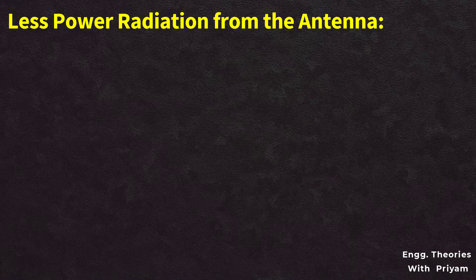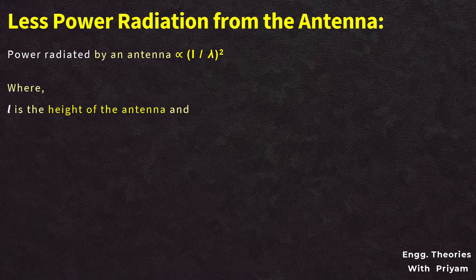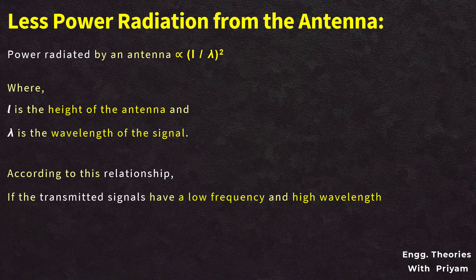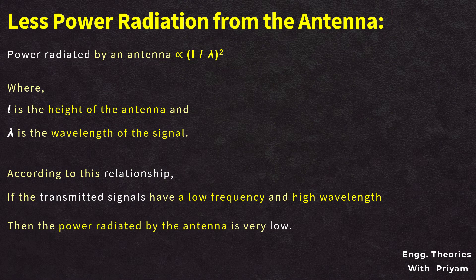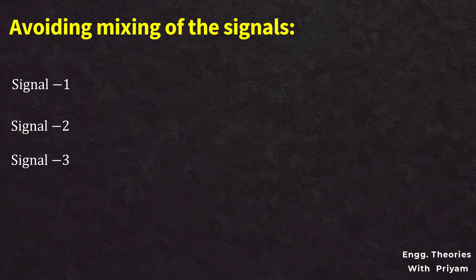Less radiated power from the antenna: the power radiated by an antenna is proportional to (L/λ)², where L is the height of the antenna and λ is the wavelength of the signal. If the transmitted signal has a low frequency and high wavelength, the radiated power is very low and the signal will vanish after traveling some distance. That is why modulation is needed — to change the frequency and wavelength so the signal does not get distorted and vanish.